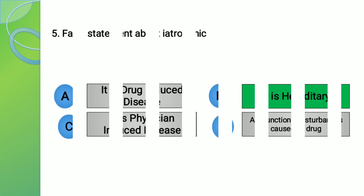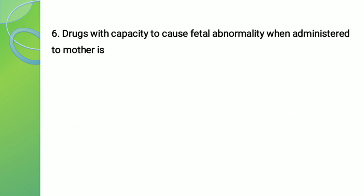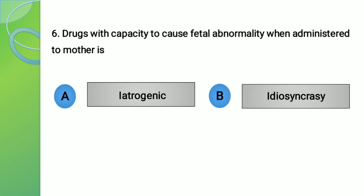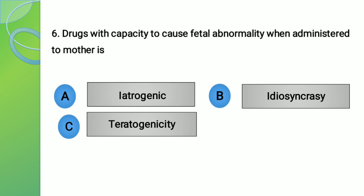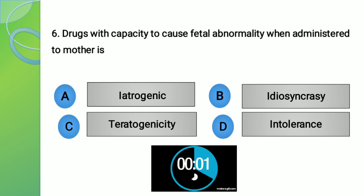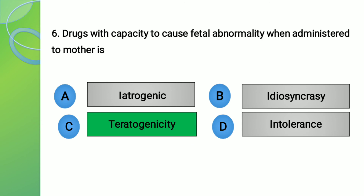Moving to question number 6. The question is: drug with capacity to cause fetal abnormality when administered to mother is? The options are: A - Iatrogenic, B - Idiosyncrasy, C - Teratogenicity, and D - Intolerance. The right answer is option number C, teratogenicity — those drugs which are capable of causing fetal abnormalities when administered to the mother.